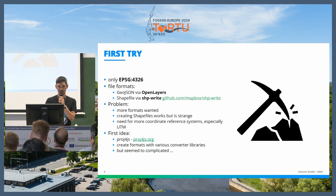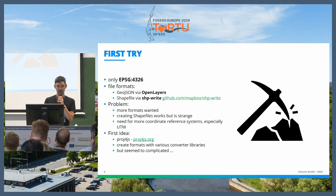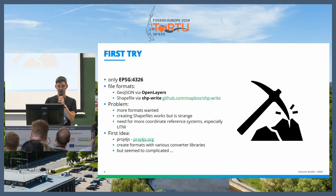My first try was to create a little OpenLayers map where I could just draw a rectangle and it would create some points, and you can export it as a GeoJSON or a shapefile using the shape-write library.